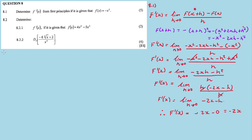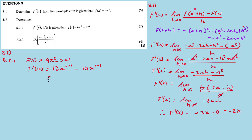8.2.1: Find f'(x) given that f(x) = 4x³ - 5x². Therefore f'(x) = 4×3 = 12, then x^(3-1); minus 2×5 = 10, then x^(2-1). So our answer is 12x² - 10x.